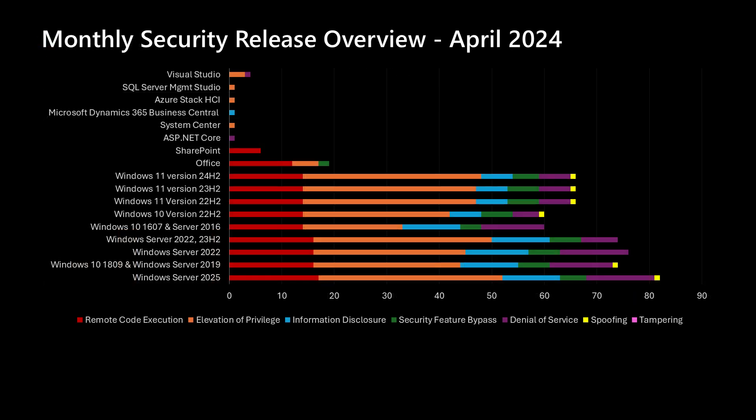Next, we'll move into just this release and start with an overview. Those of you familiar with this video will recognize that we put the Windows products towards the bottom and then move up into things like Office and other products not serviced every single month. With Windows, as we can see this month, we're ranging between a little over 80 vulnerabilities on Windows Server 2025 and down to just under 60 vulnerabilities on a couple of the Windows 10 products.